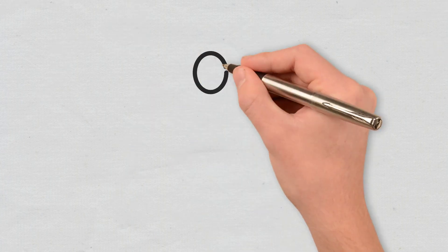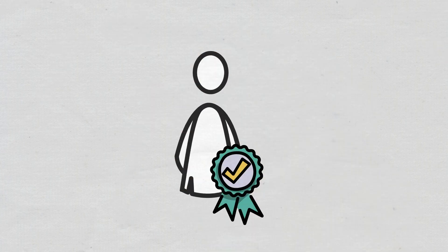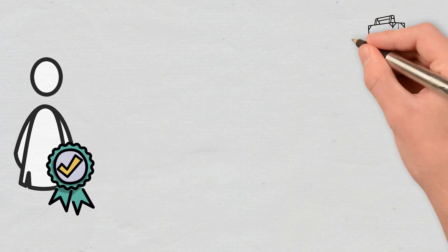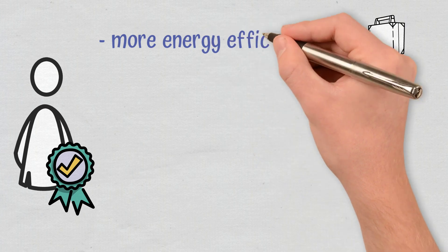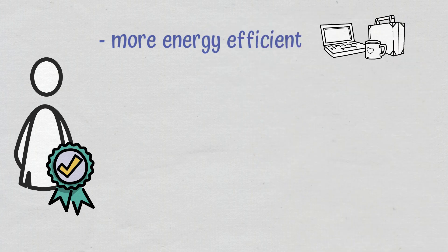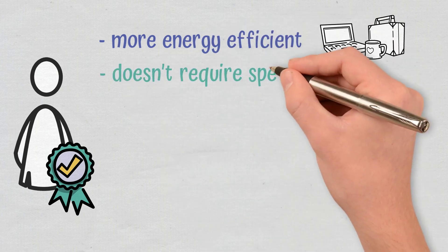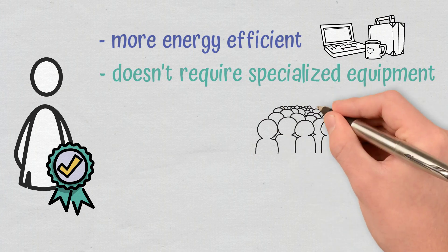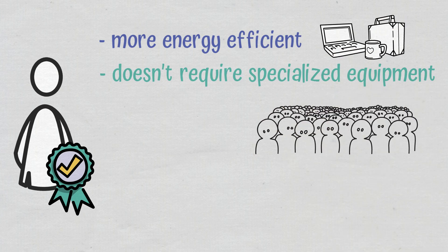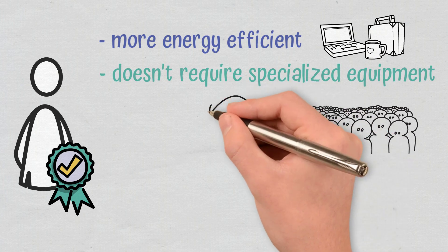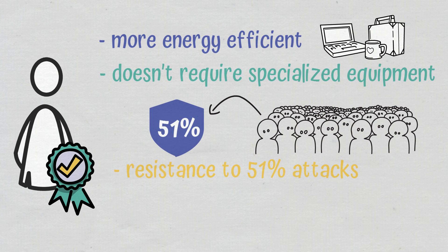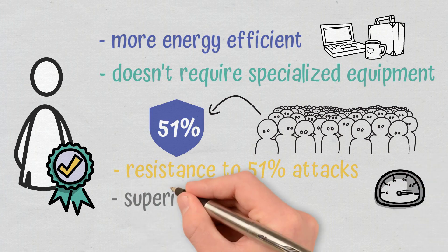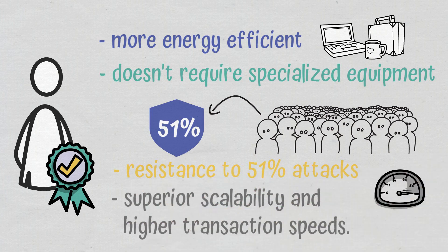The way Proof-of-Stake works leads to several advantages. Since it does not require the computational power involved in Proof-of-Work models, Proof-of-Stake is more energy-efficient. Given that it is not based on computing power, it doesn't require specialized equipment so more people can participate in running a Proof-of-Stake node. The more people participate, the higher the network's level of decentralization and resistance to 51% attacks. It ensures superior scalability and higher transaction speeds.